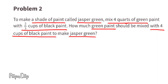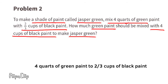Problem number two: to make a shade of paint called Jasper Green, mix four quarts of green paint with two-thirds of a cup of black paint. How much green paint should be mixed with four cups of black paint to make Jasper Green? The information tells us you need four quarts of green paint for every two-thirds cup of black paint.